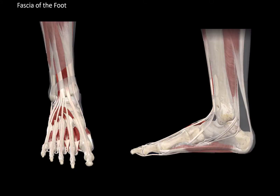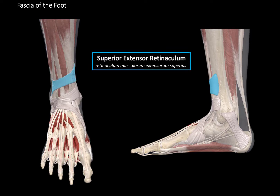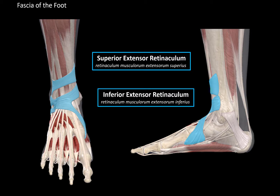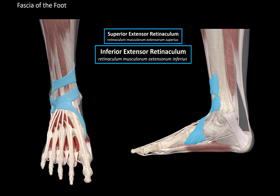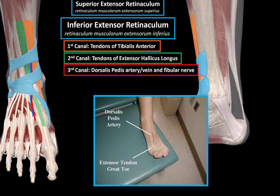Now let's understand the fascia of the foot, starting by looking at the dorsum and medial view. The fascia of the leg continues down to form thickened bands of fibres that protect and organize the tendons going down to the foot — these bands are called the retinacula. We have a superior extensor retinacula and an inferior extensor retinacula. The inferior extensor retinacula forms four canals: the first for the tibialis anterior tendon with a synovial sheath, the second for the extensor hallucis longus tendon, and the third for the dorsalis pedis artery, vein, and fibular nerve — an important landmark for palpating the dorsalis pedis pulse.